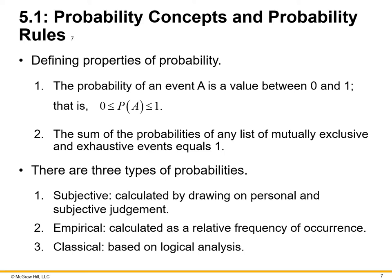Two, empirical, calculated as a relative frequency of occurrence. So if something happens more often than not in a trend analysis, or even one of those ranges or mean, medians, and modes, that probability outcome could also be part of this. Classical based on logical analysis.